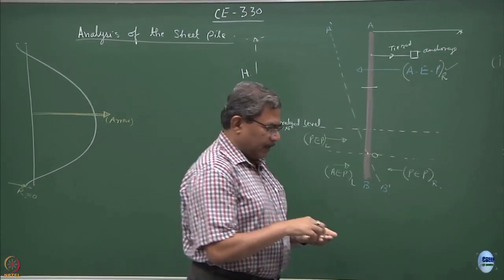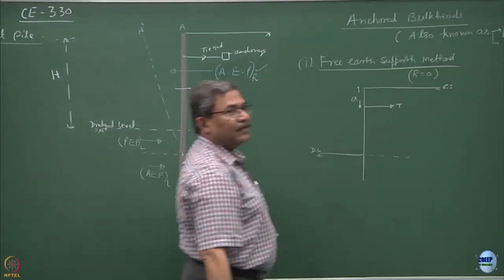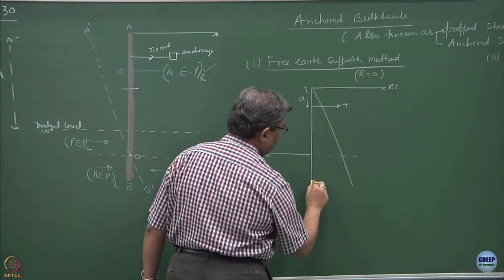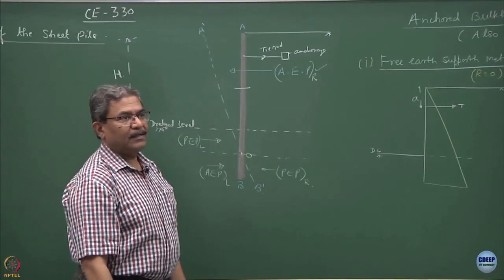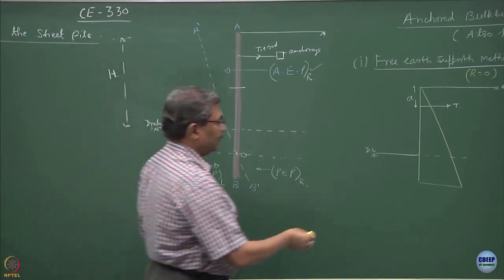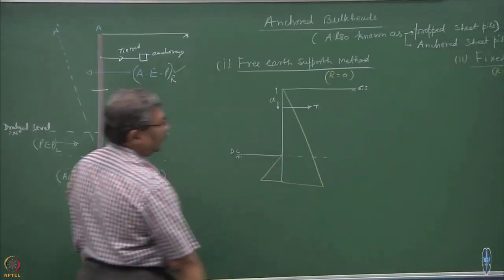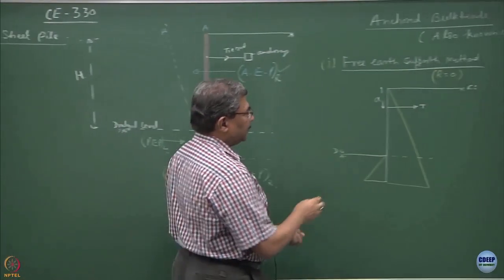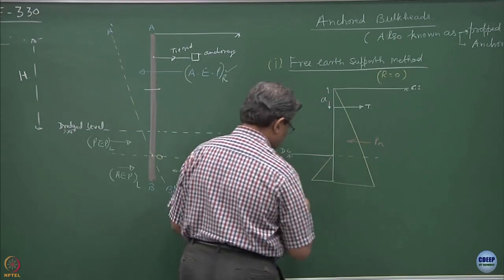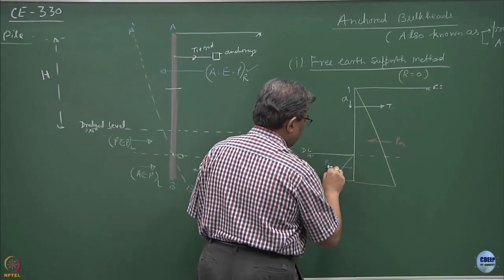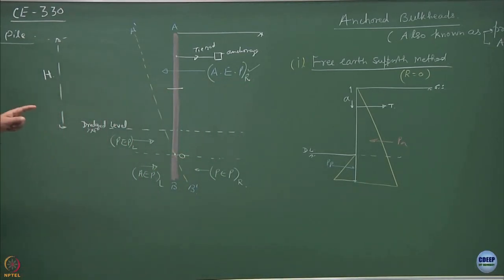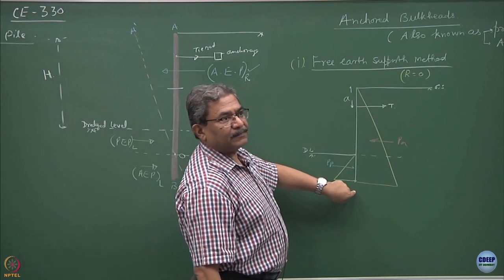So, the pressure distribution is very simple. That is what we did, active earth pressure and then how about the passive earth pressure. This is active earth pressure, this is passive earth pressure. At this point r is 0, why? Because we are assuming that this is a free earth support method.